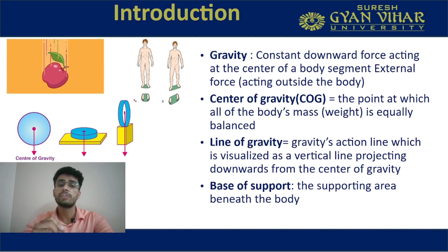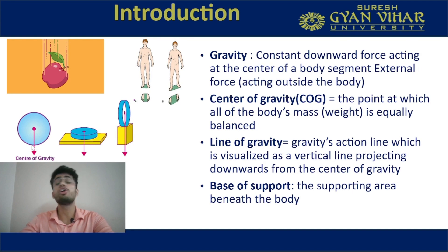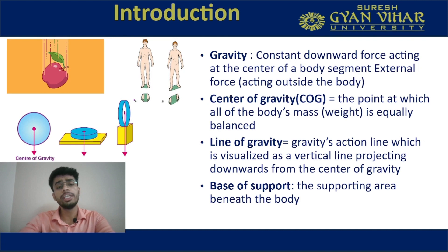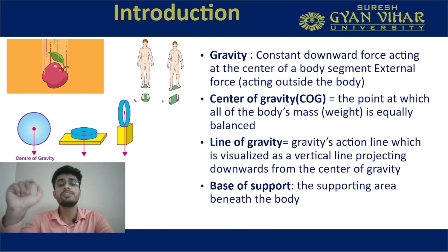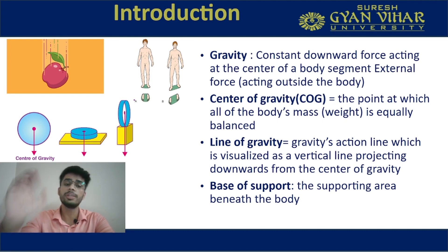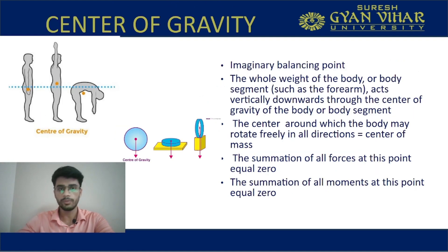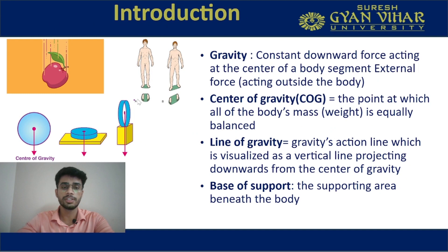For example, if there is a center of gravity — as you can see within this circle — the vertical line passing through the center of gravity is called the line of gravity. This is the line on which gravity is acting. Base of support is the supporting area beneath the body. It is the area between your feet — as you can see in the diagram, the person is standing and the green area depicts the base of support.